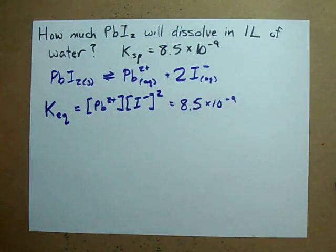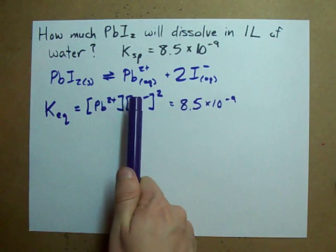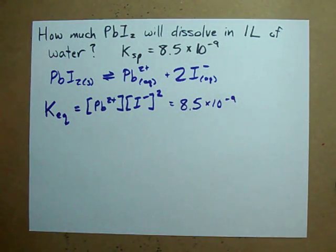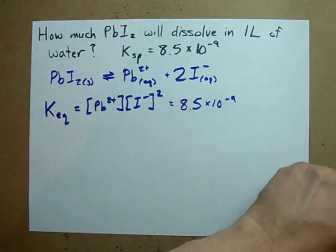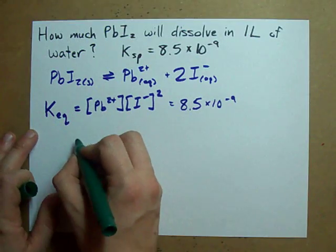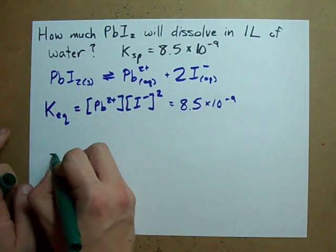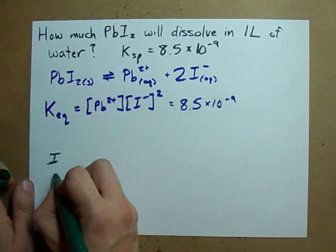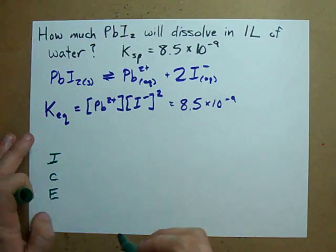What we've got to solve for, though, are the actual concentrations. How are we going to do that? I propose using an ICE table, because it's an equilibrium after all. If we take an ICE table, we're looking for the initial concentrations, the change, and the equilibrium concentrations.